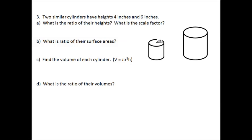Let's look at another example. Two similar cylinders have heights 4 inches and 6 inches. What is the ratio of their heights? What is the scale factor? What is the ratio of their surface areas? And then we're going to find the volume of each cylinder and the ratio of the volumes.